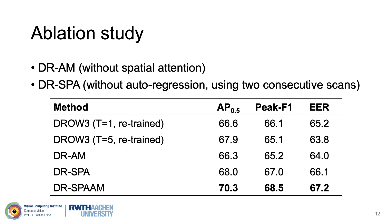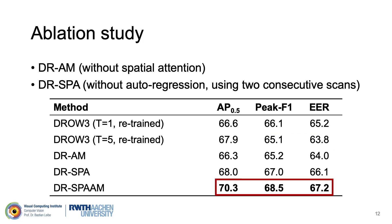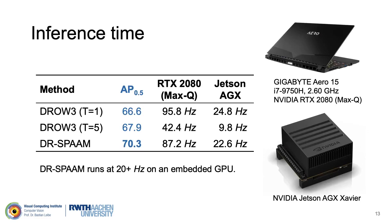To evaluate the contribution of the proposed SPAN module, we conduct ablation studies by either removing spatial attention or autoregression. For baseline comparison, we retrain DROV3 networks using the same preprocessing parameters. The multi-scan DROV3 outperforms the single-scan version, showing the effect of incorporating temporal information. Without correcting the misalignment, however, combining scans decreases detection performance. Using spatial attention for alignment outperforms the multi-scan baselines, highlighting the benefit of a learned feature association module. The best results are obtained by combining the large temporal window of the autoregressive model with the alignment of spatial attention. We measure end-to-end inference time on a laptop with a dedicated GPU and on an NVIDIA Jetson AGX with an embedded GPU. DRSPAN is more than twice as fast as multi-scan DROV3.